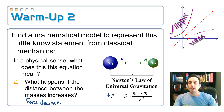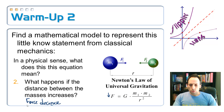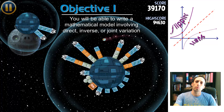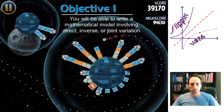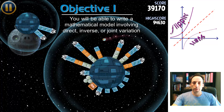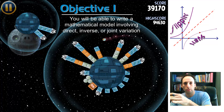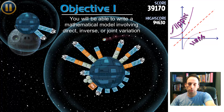So there are some applications of the vocabulary words: directly proportional, jointly proportional, and inversely proportional. Objective one is being able to write a mathematical model involving these — direct, inverse, and joint variation. This ties into Star Wars, Angry Birds, and the universal law of gravitation we just worked with in the warm-up.